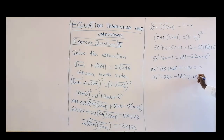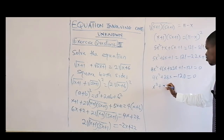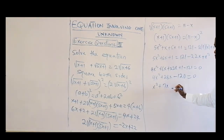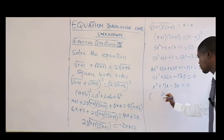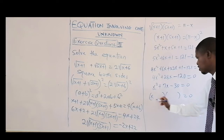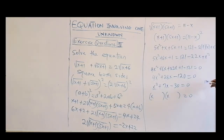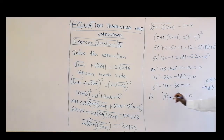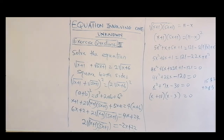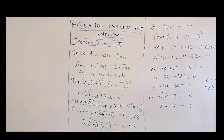Dividing through by four gives x squared plus 7x minus 30 equals zero. Factorizing: we need factors of 30 that give a difference of 7 — that's 10 and 3. So (x + 10)(x - 3) = 0, giving x equals minus ten or x equals three. That is the solution for this question.